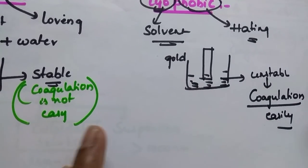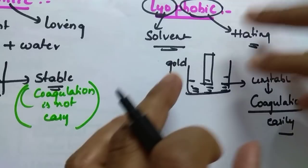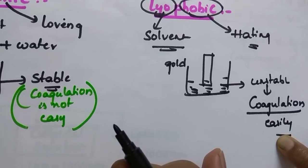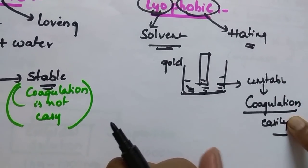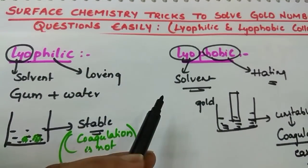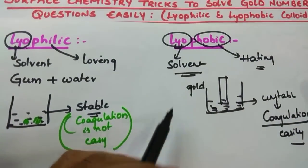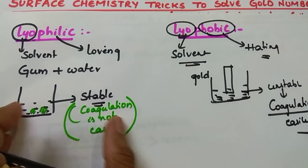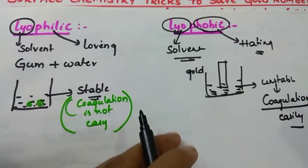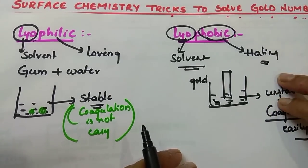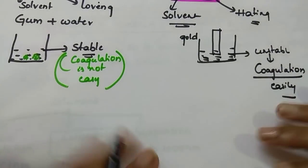Lyophobic undergoes coagulation, so what we want to do is make this lyophobic colloidal solution stable. I usually pronounce this as leophilic and leophobic but the correct pronunciation is lyophilic and lyophobic. Lyophilic is a stable solution and lyophobic is an unstable solution. What we want to do is make this lyophobic solution stable.